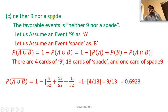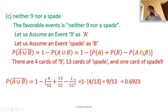Part C — neither 9 nor a spade: let event A be 9 and event B be spade. P(A union B whole bar) = 1 minus P(A union B) = 1 minus [P(A) + P(B) − P(A intersection B)]. There are 4 cards of 9, 13 cards of spades, and 1 card of spade-9. So: 1 minus (4/52 + 13/52 − 1/52) = 1 minus 4/13 = 9/13.